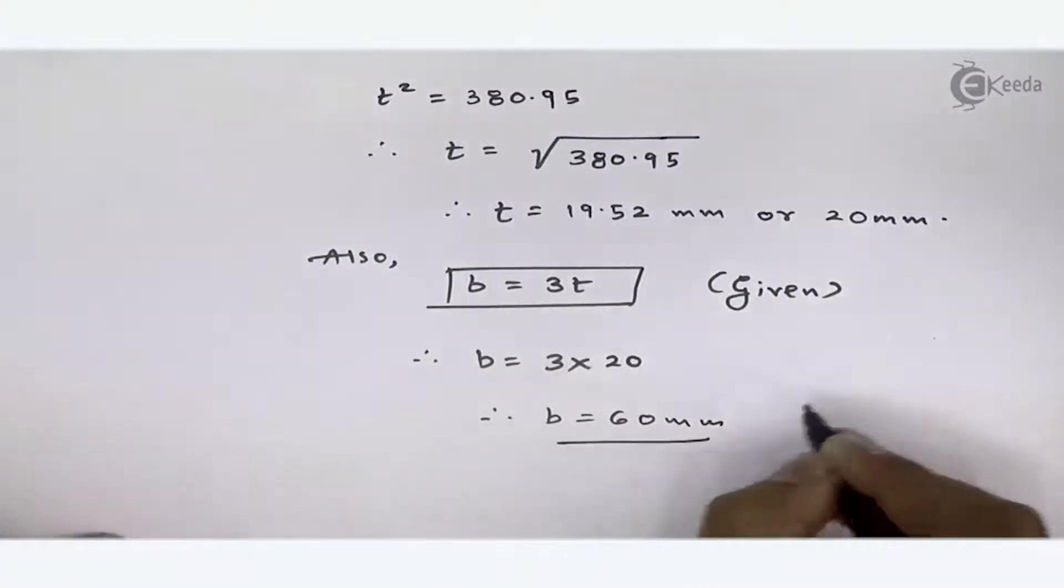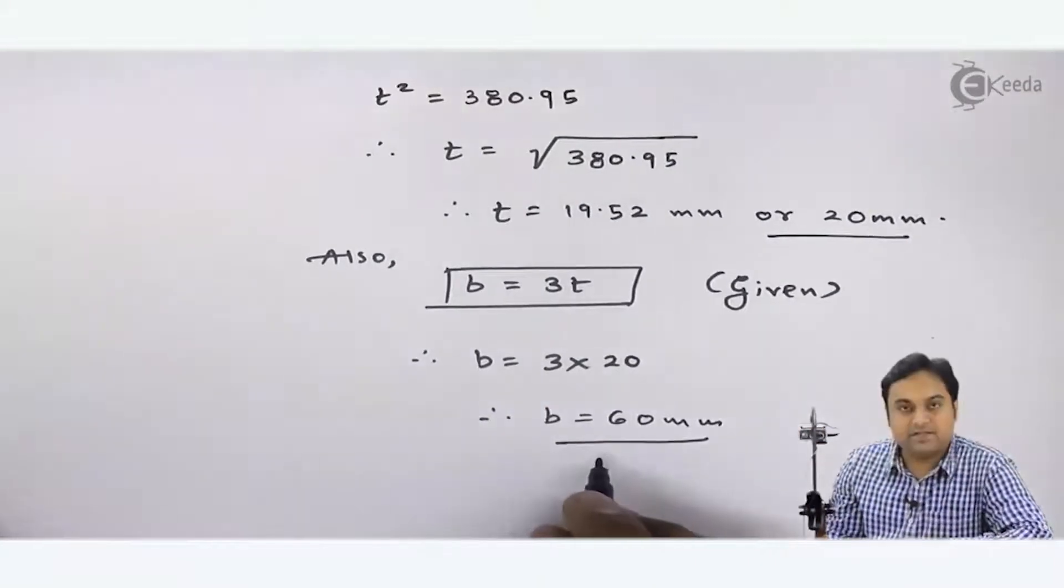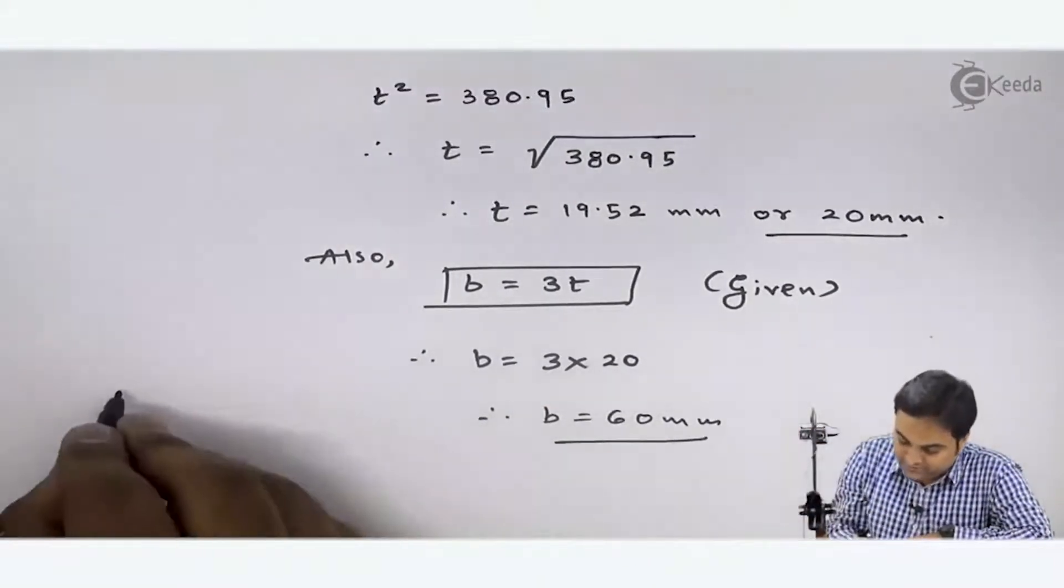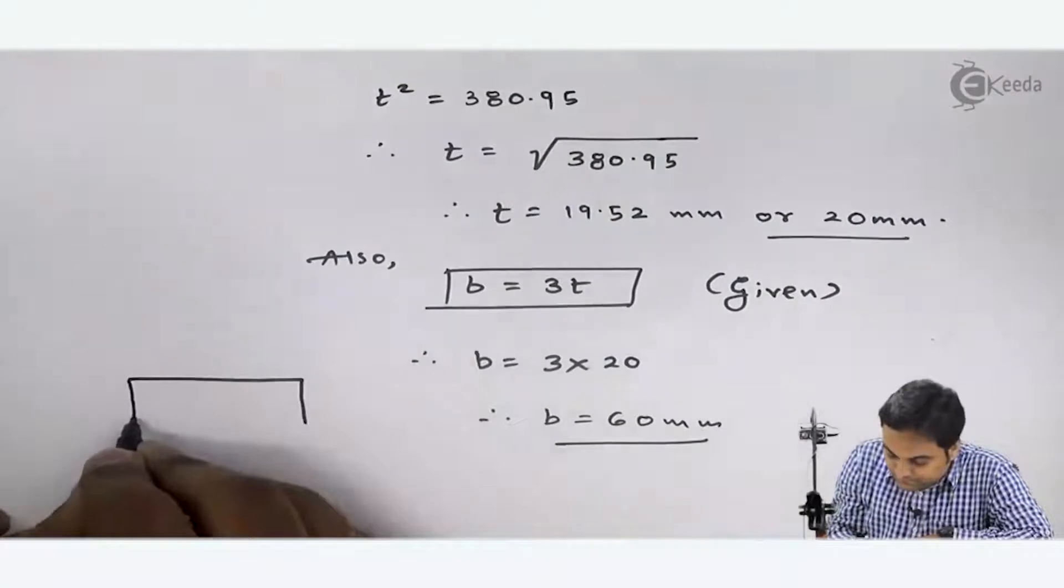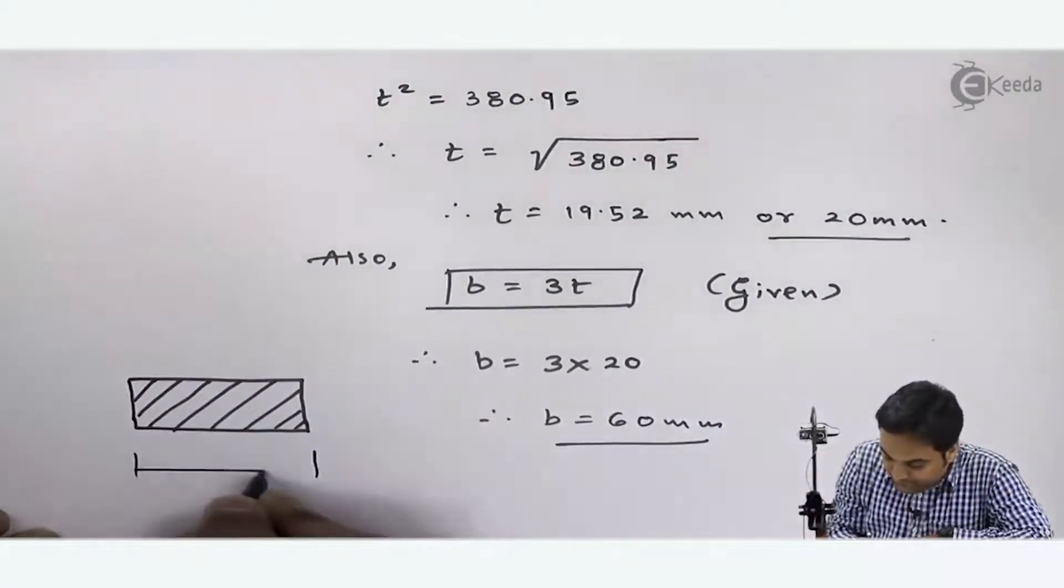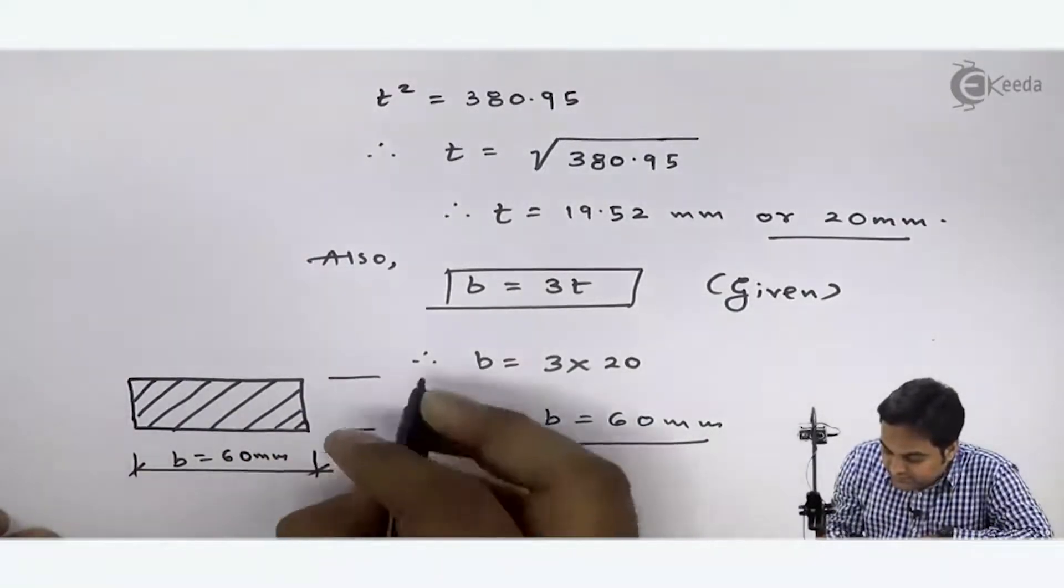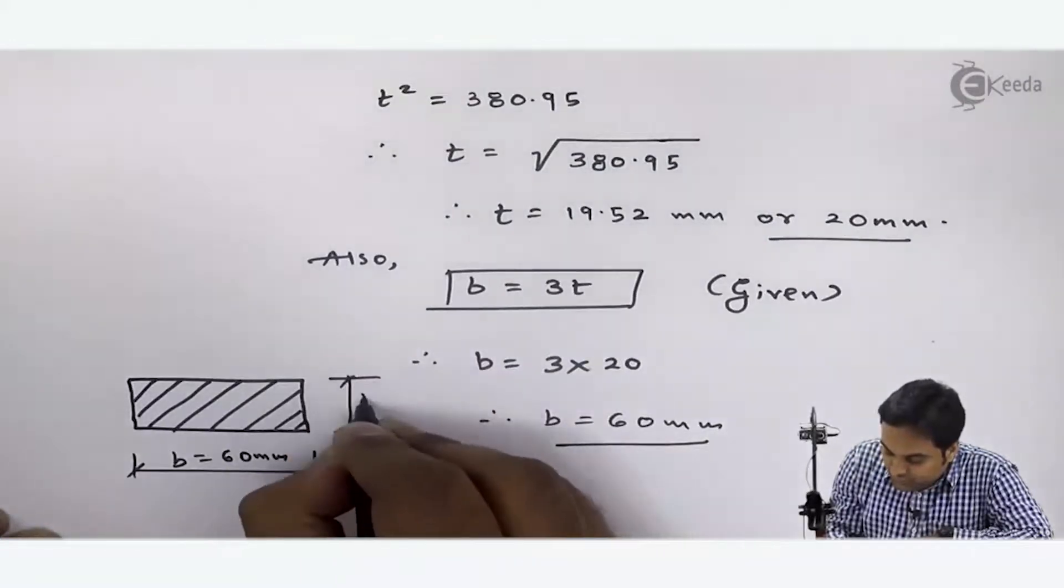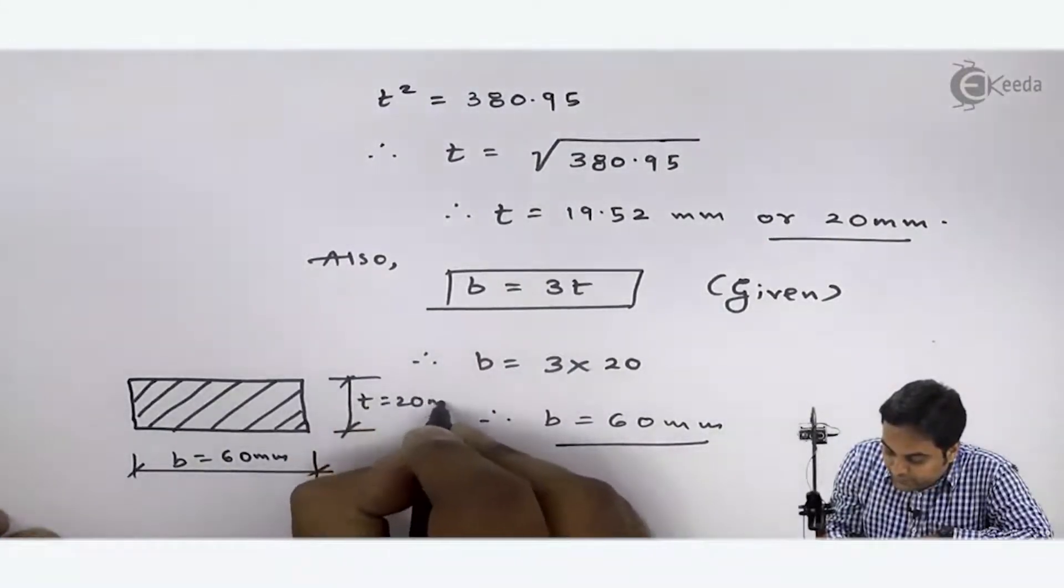So if I have to show the section, I can show this rectangular section like this. Here I have B width as 60 mm, and thickness T is equal to 20 mm.